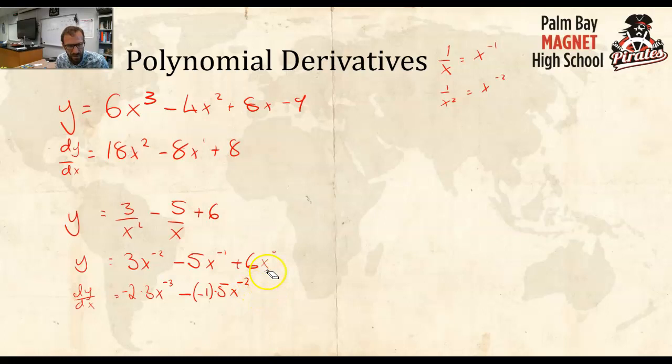yeah, that is it. We are done. So, all I've got to do is tidy it up now. So, I've got negative 2 times 3 is 6. Let's put the x underneath. x cubed because, you know, over x cubed is the same as x to the negative 3. Negative negative is a plus. So, this is going to become 5 over x squared.